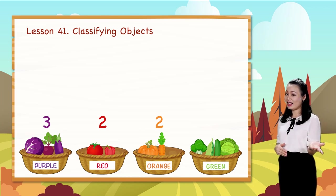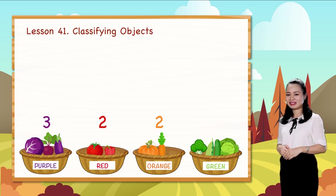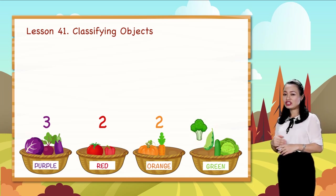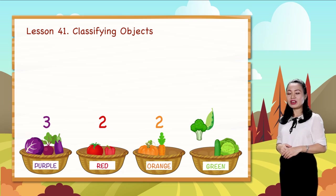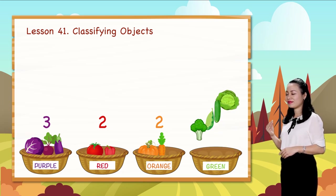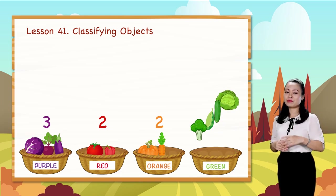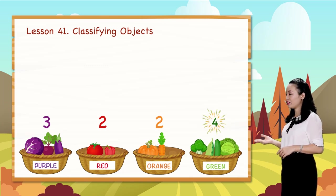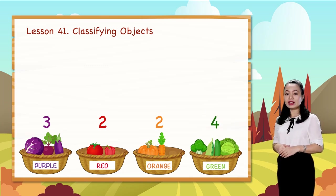The last one. One, two, three, four — so there are four vegetables in the green group.